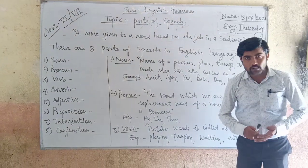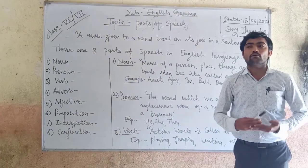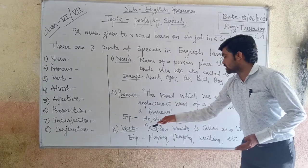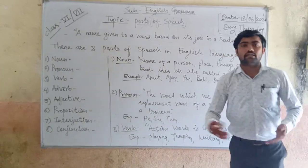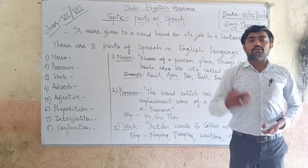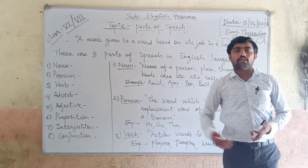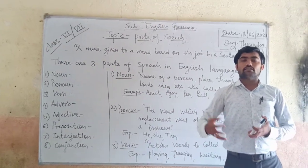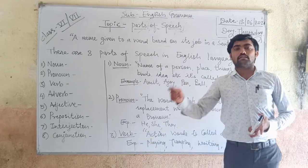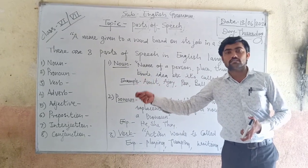For example — he, she, they. Ajain is a boy. He is a good boy. He is very good in cricket. He is studying in class 7.